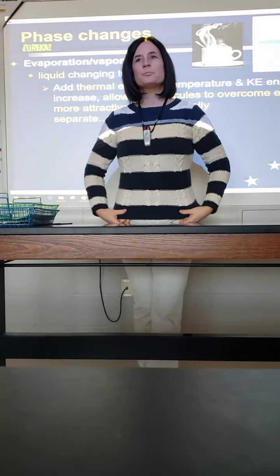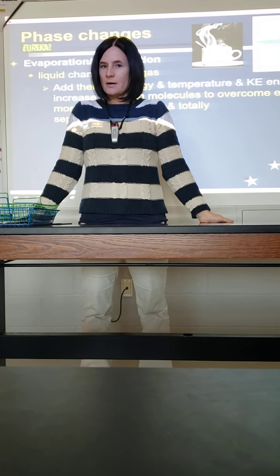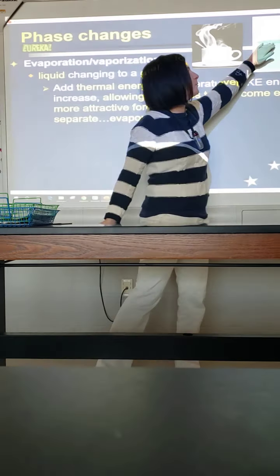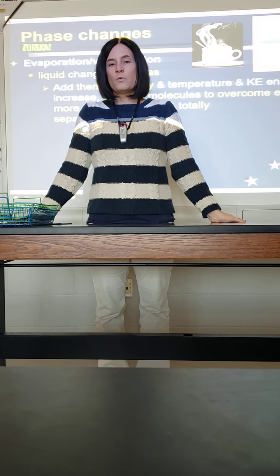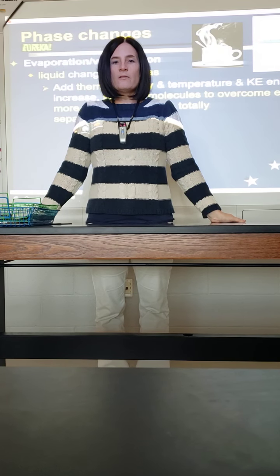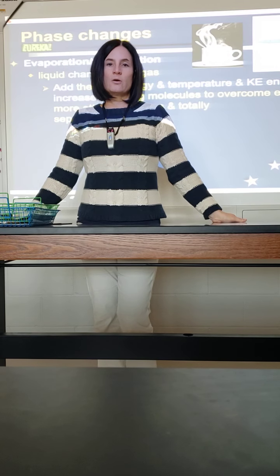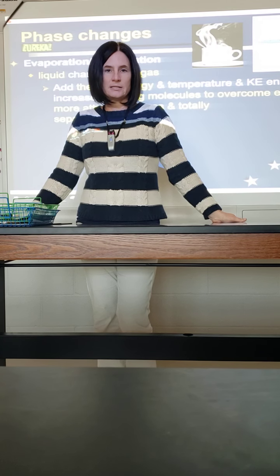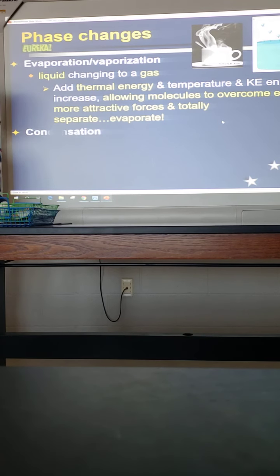This evaporation process happens at the surface of liquids. If you've ever had a fish tank and had to add more water, it's not because something is drinking it — it's because at the surface there's a little bit of evaporation. This is part of our water cycle: all the water covering the surface of the earth is going through some evaporation at the surface level. Some of those water molecules are escaping from liquid form into vapor form. We can make this process happen more by increasing the temperature.